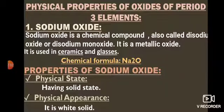Physical properties of oxides of period 3 elements. Number one: sodium oxide. Sodium oxide is a chemical compound, also called disodium oxide or disodium monoxide. It is a metallic oxide, also called a basic oxide, because when sodium oxide is dissolved in water it gives a base — sodium hydroxide. Sodium oxide is used in ceramics and in glass.